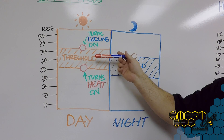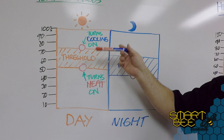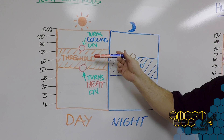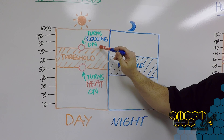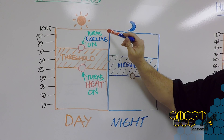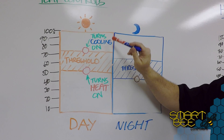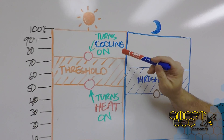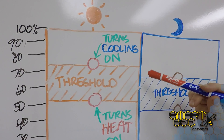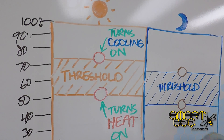When the temperature in your room exceeds your threshold, this is when it turns cooling devices on that are tied into the smart strips and smart plugs.